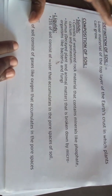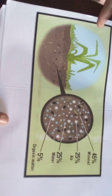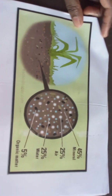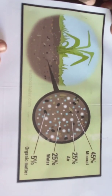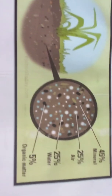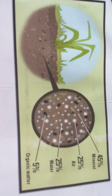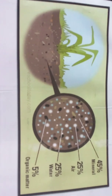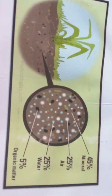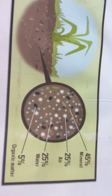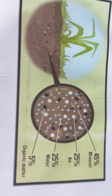We have air, water, humus content, and mineral content within our soil — that is the composition of soil. Our mineral content usually comprises about 45 percent. Air and water both consist of 25 percent each. Then five percent is composed of our organic matter, which is usually the humus content of the soil.